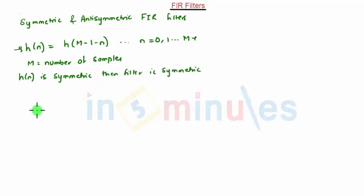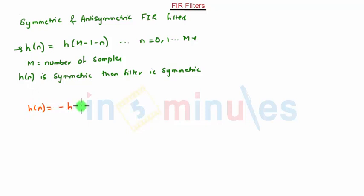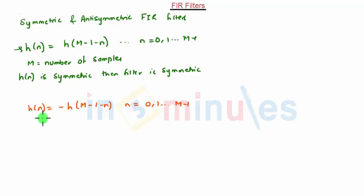Now consider the unit sample response of an FIR filter that is anti-symmetric. It should satisfy the condition h(n) = -h(M-1-n), where n ranges from 0 to M-1. If this condition is satisfied, then the filter is anti-symmetric.